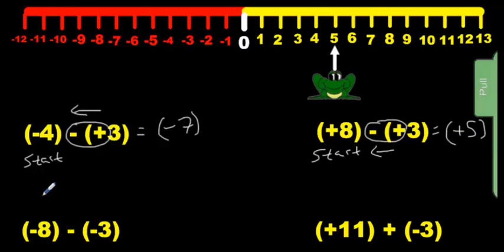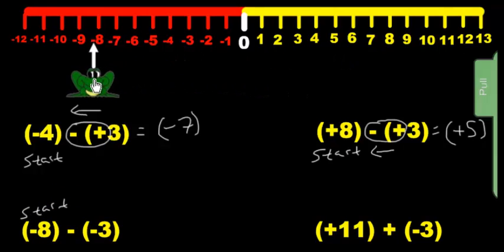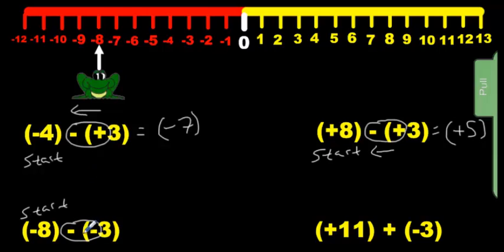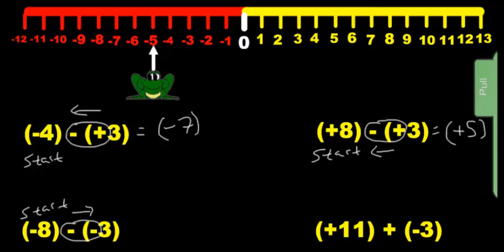Now looking at this one here, we have a new starting point at negative 8. So we're going to put him at negative 8 — that's where he starts. We look at the signs and we say they are the same. If the signs are the same, we don't care if they're both negatives or positives — as long as they are the same, you go to the right. So we're going to bounce three to the right, and we end up at negative 5.